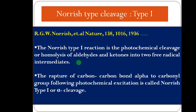Norrish type 1 cleavage involves the rupture of a carbon-carbon bond placed at the alpha position to the carbonyl group. Such a photochemical excitation is called Norrish type 1 cleavage, which was published by Norrish and his team in Nature during 1936.